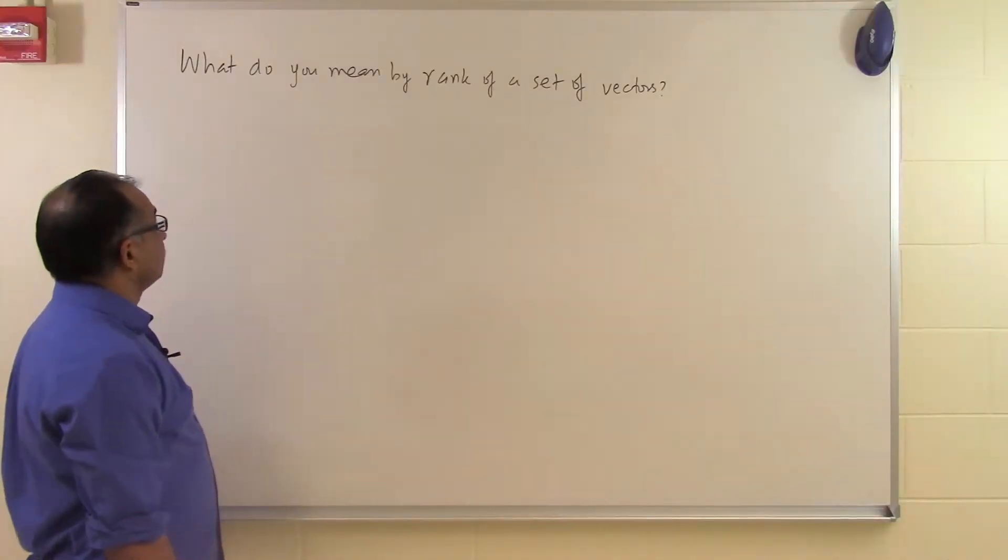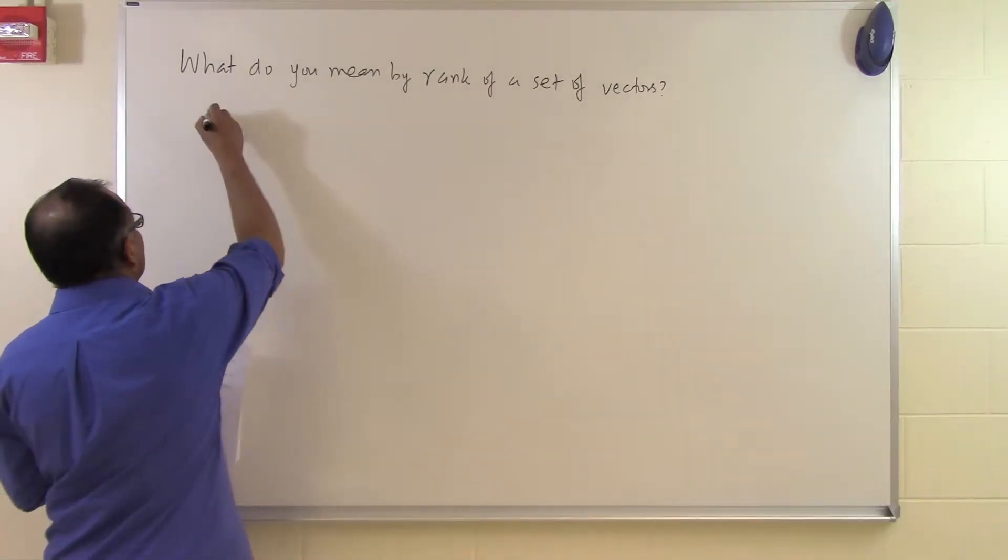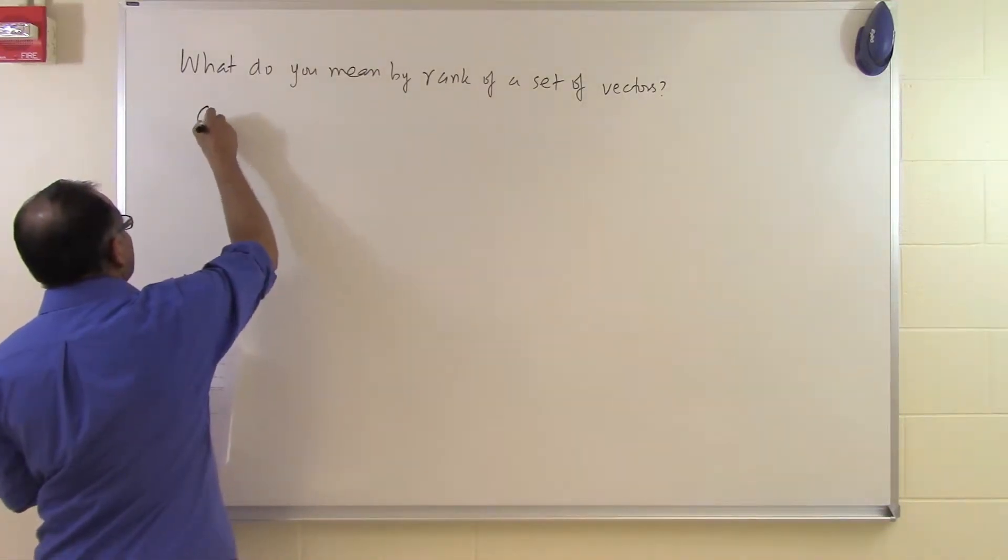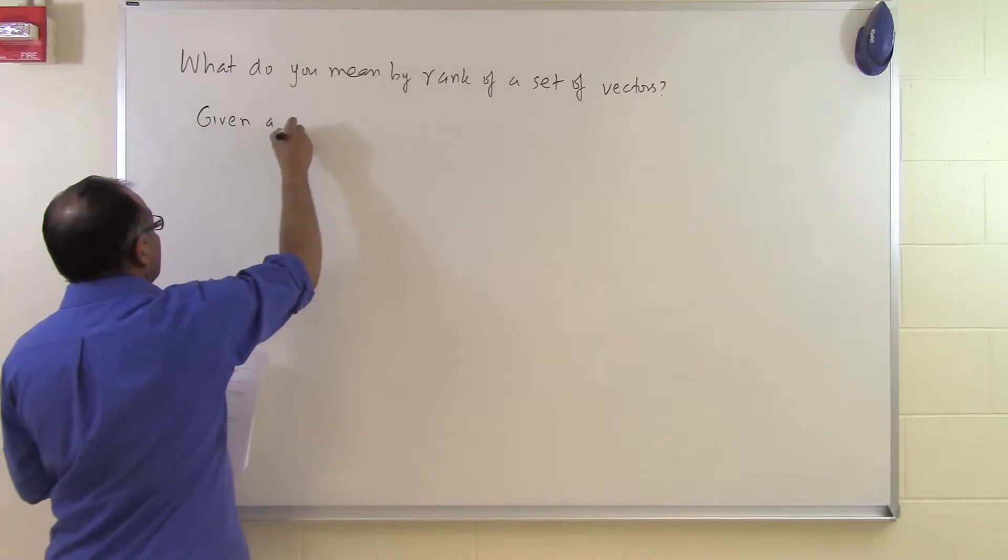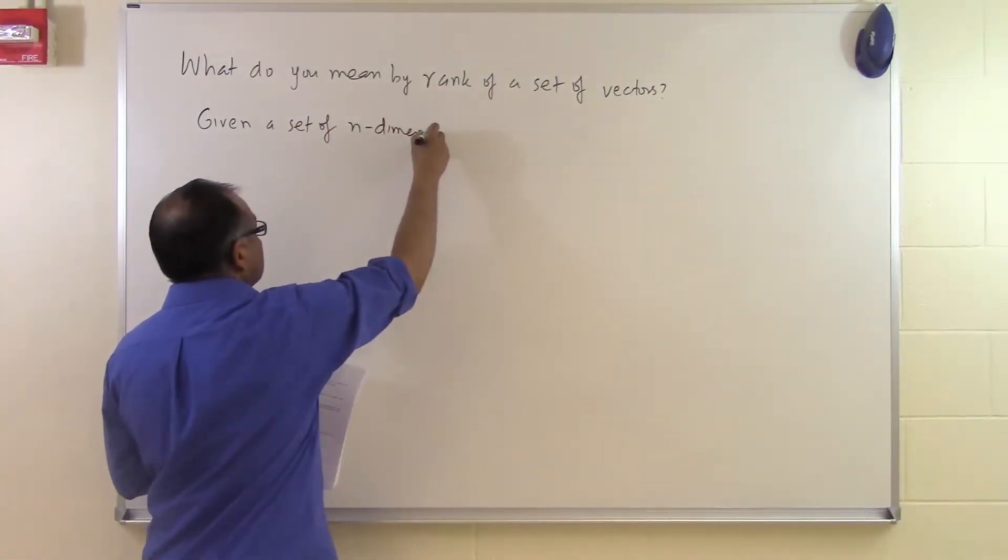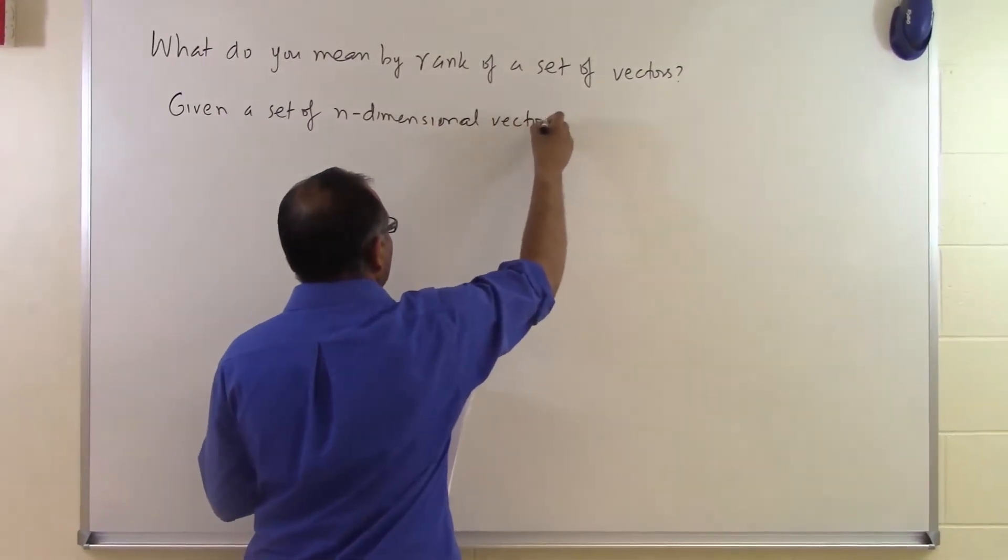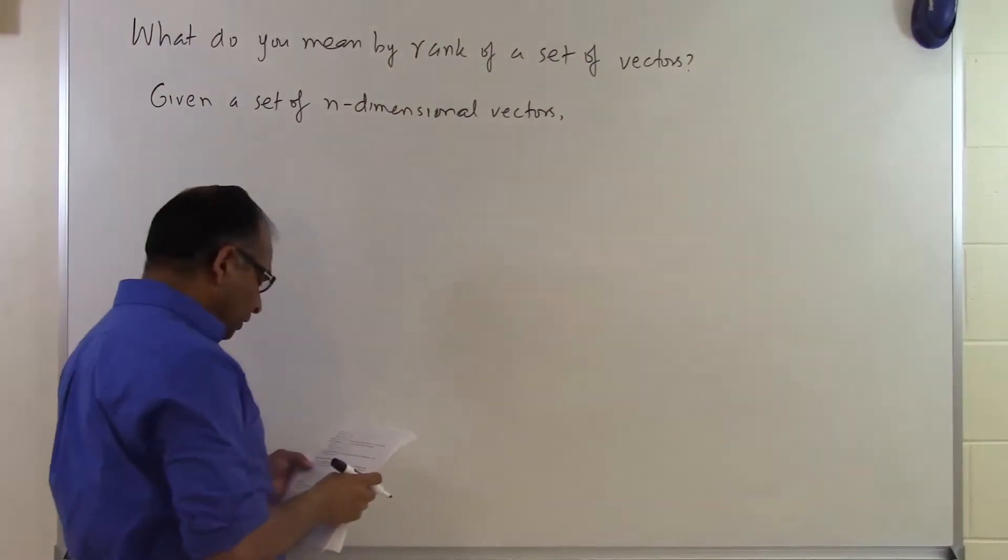In this segment, we will talk about what we mean by rank of a set of vectors. If you are given a set of n-dimensional vectors, that means you are given vectors which have n components each in them.